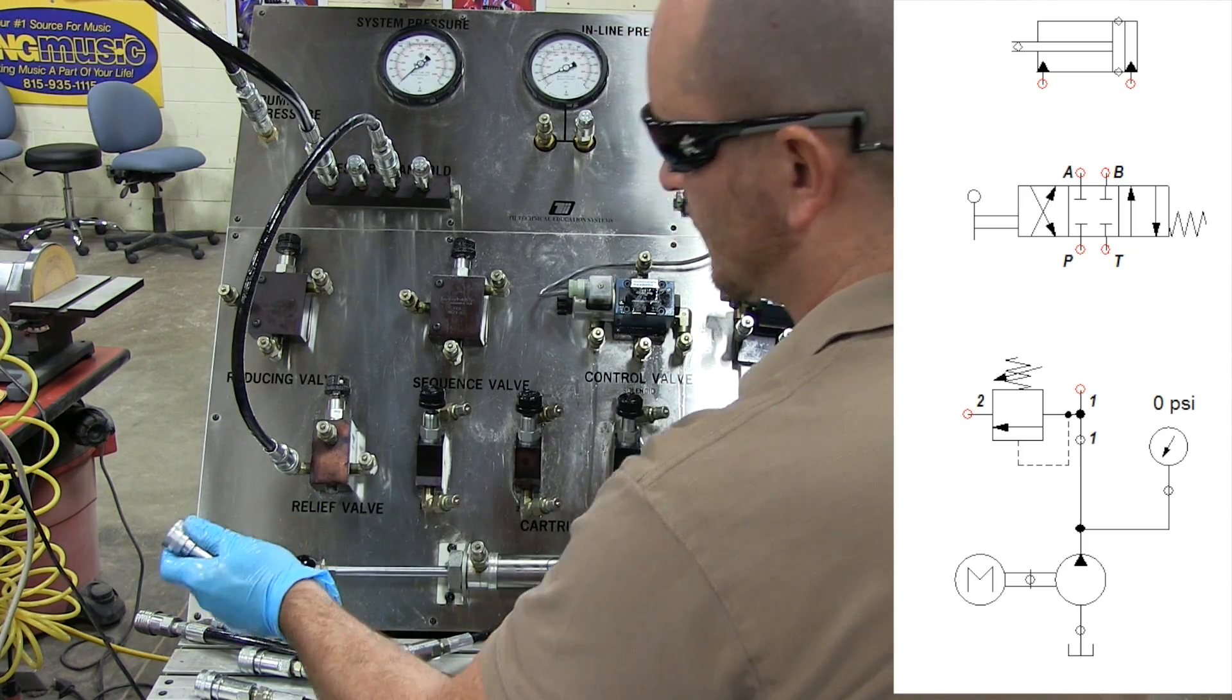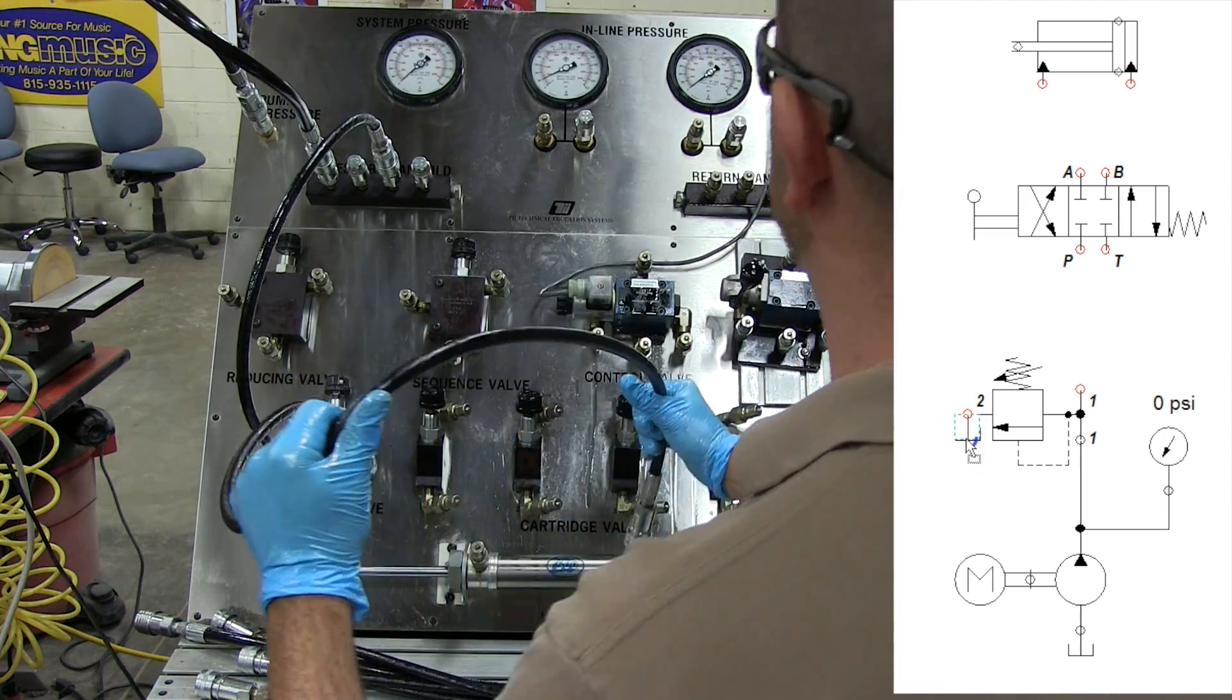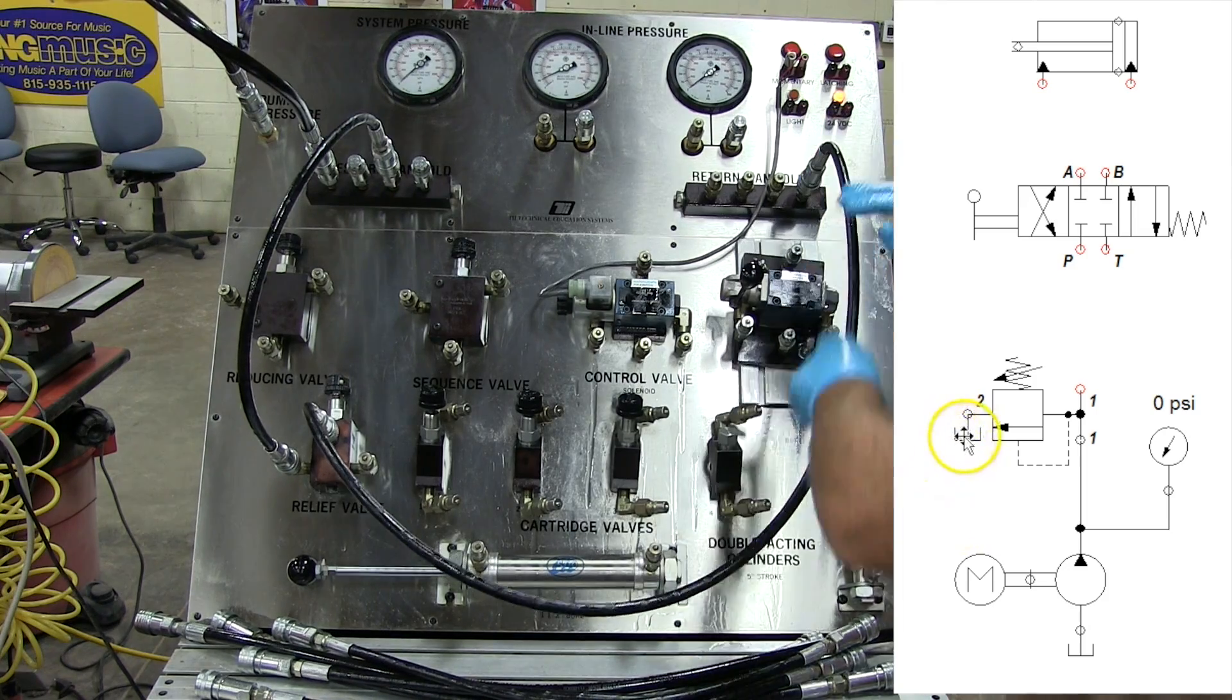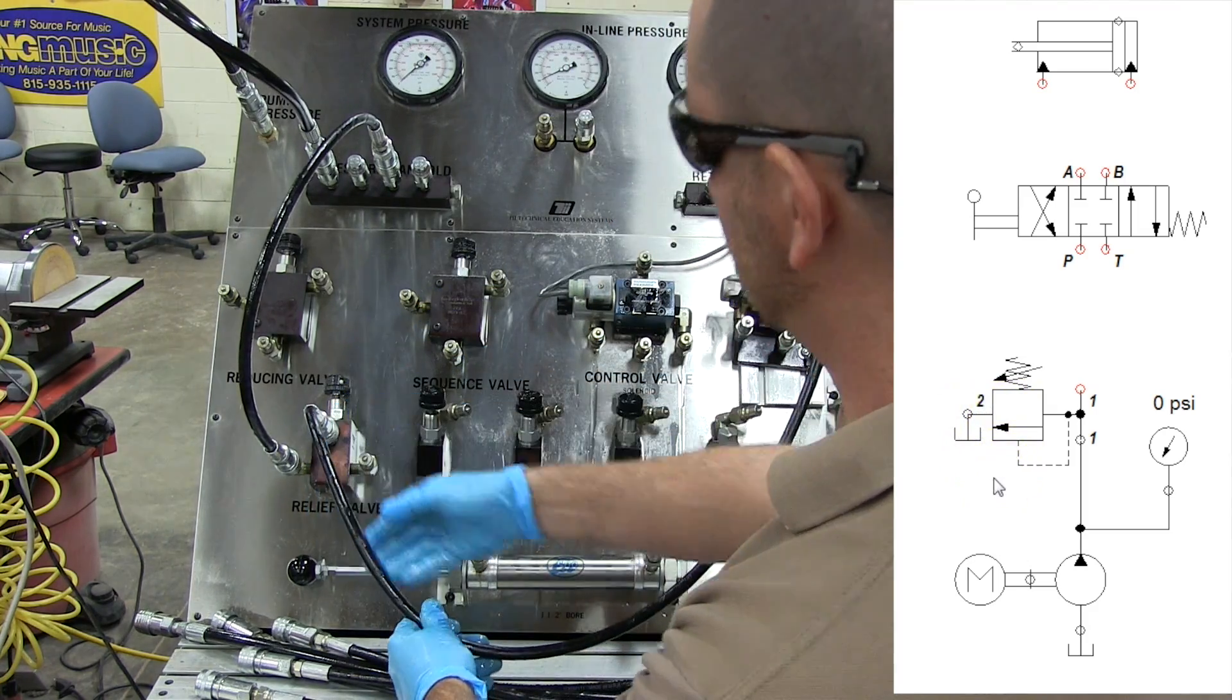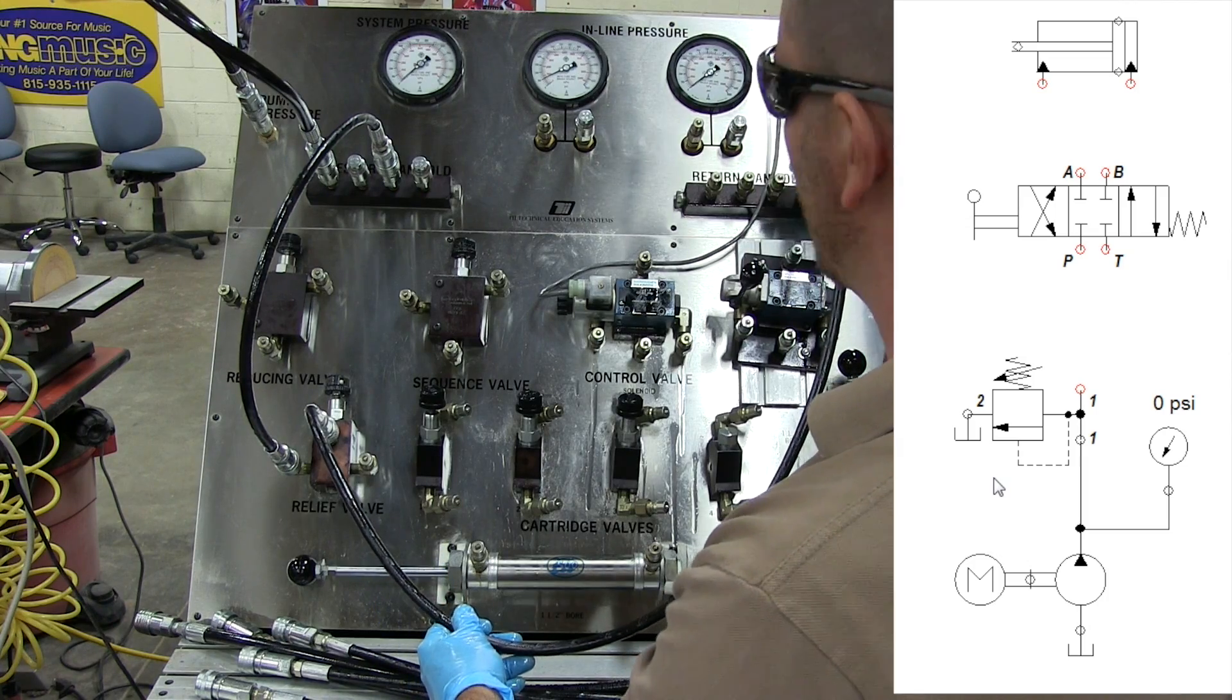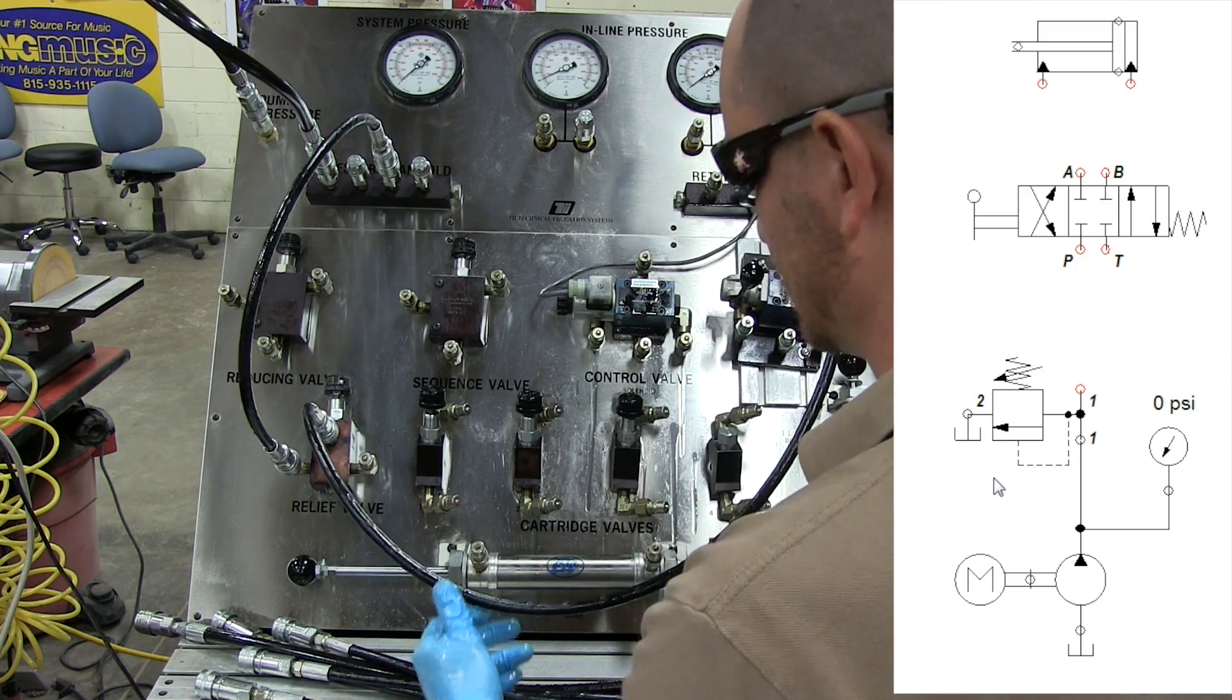So what we always want to do is we want to take our tank port, the one that goes to tank. This will always go to tank. Now schematically this can be deceiving because the tank is always right next to the pressure relief valve, but in real life it's a hose or a pipe or a combination of a pipe and a hose going all the way back to either a return manifold or directly back to the tank, depending on the size of the system.